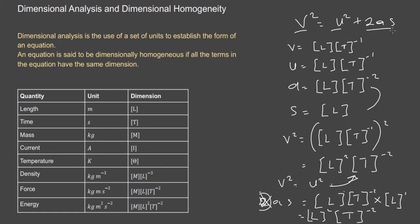This concept applies to all equations in physics. If an equation is not dimensionally consistent, it implies there's an error in that equation. Every scientist knows that whatever equation they propose must be dimensionally consistent.